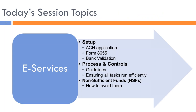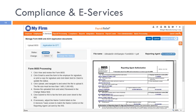Our next topic is e-services. We'll look at setup, processes, and controls — including significant recent changes — and briefly discuss non-sufficient fund situations and how to avoid them. The ACH application and Form 8655 are required documents for any electronic services in Payroll Relief. I want to focus on the actual process and guidelines for using e-services as they relate to compliance.